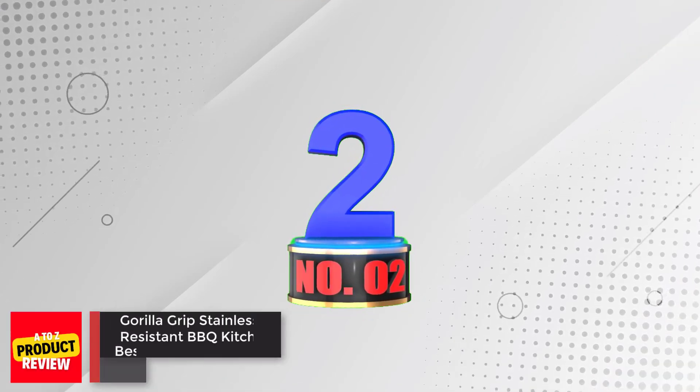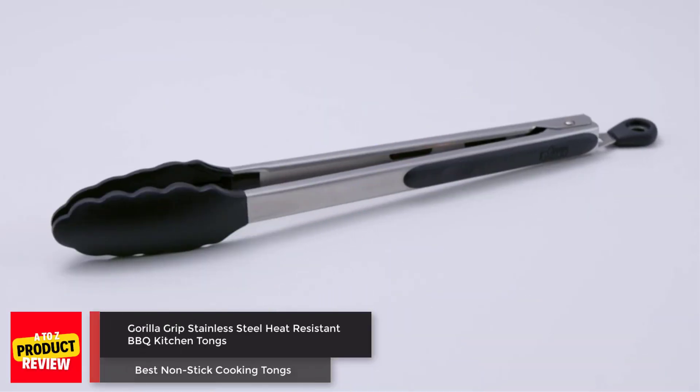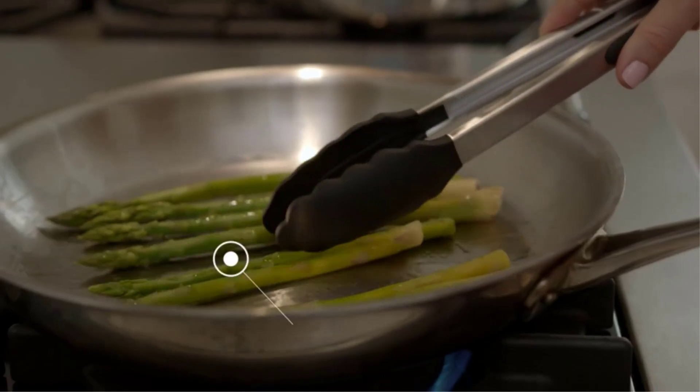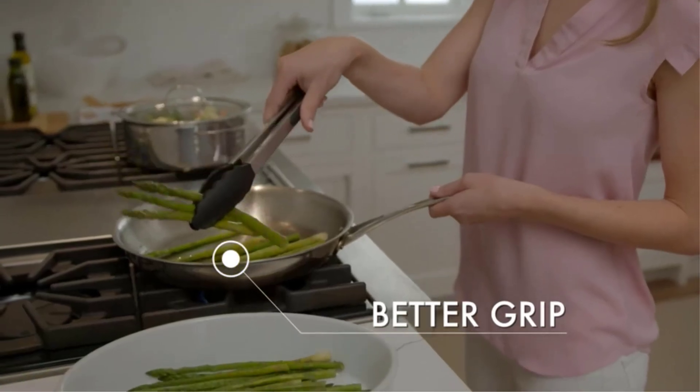Number two: Gorilla Grip Stainless Steel Heat-Resistant BBQ Kitchen Tongs. Gorilla Grip cooking tongs are a set of two tongs that come in 9 and 12 inches.